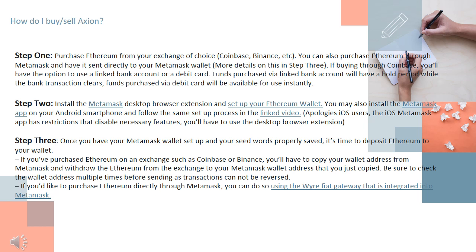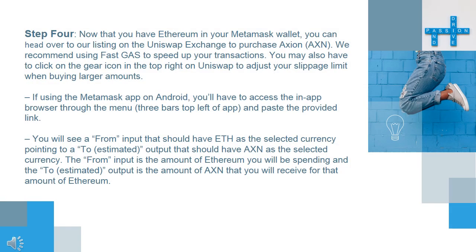Step 3: Once you have your Metamask wallet set up and your seed words properly saved, it's time to deposit Ethereum to your wallet. If you've purchased Ethereum on an exchange such as Coinbase or Binance, you'll have to copy your wallet address from Metamask and withdraw the Ethereum from the exchange to your Metamask wallet address. Be sure to check the wallet address multiple times before sending, as transactions cannot be reversed. If you'd like to purchase Ethereum directly through Metamask, you can do so using their Wyre gateway integrated into Metamask.